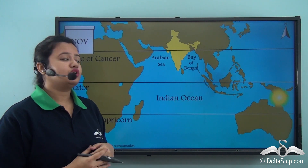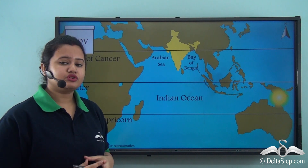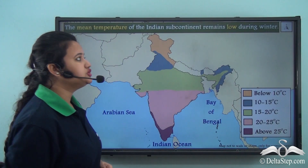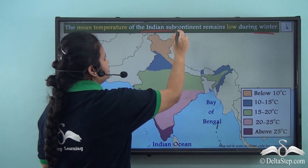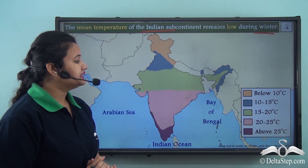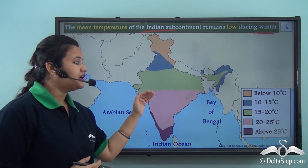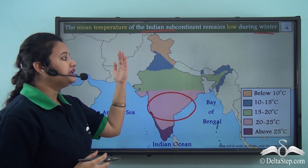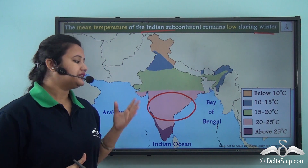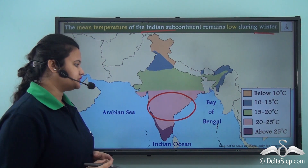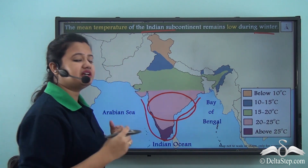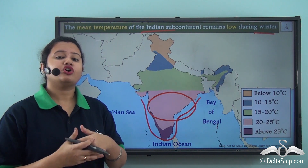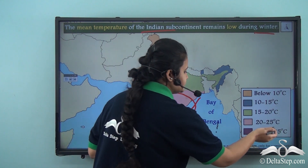Since direct rays do not fall over the Indian subcontinent, the mean temperature drops and the subcontinent gets cooler. However, temperature gradually decreases from south to north — the southern part is warmer than the northern part. This is because southern India is surrounded by water bodies on all sides, enjoying the moderating effect of the sea, so the mean temperature of south India does not fall below 20°C.